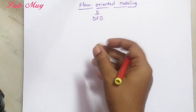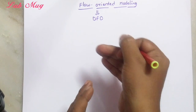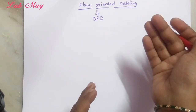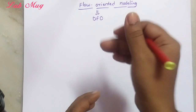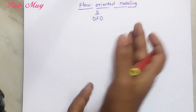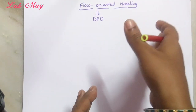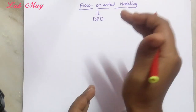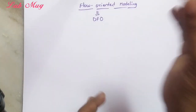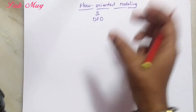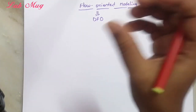This is the last stage of requirements modeling. First, scenario-based modeling was represented through diagrams. Next, that representation was input to class-based modeling, where we identified classes and their attributes. Third, behavior-based modeling used the class-based output to model behaviors. Now finally in flow-oriented modeling, taking all previous outputs as base, we discuss data objects here.